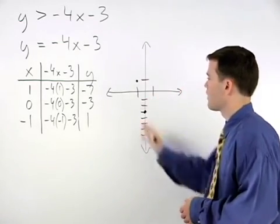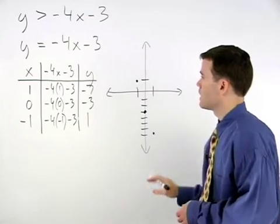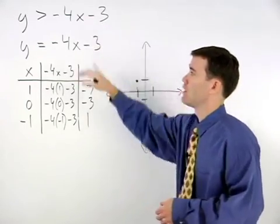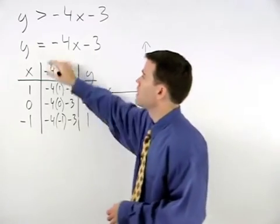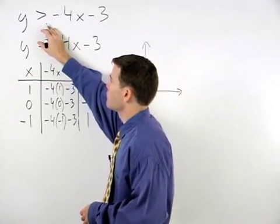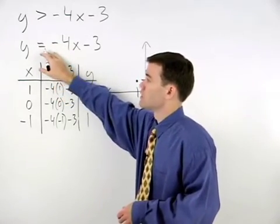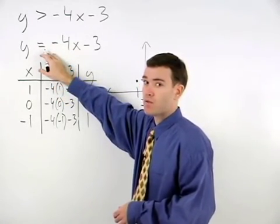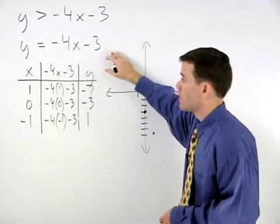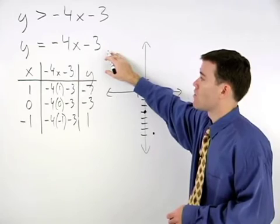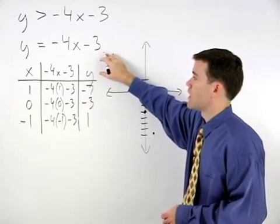Before graphing a line through these points, however, let's take a look back at the original inequality. Notice that y is greater than negative 4x minus 3. It is not equal to negative 4x minus 3. So the line y equals negative 4x minus 3 is not a part of the solution set.